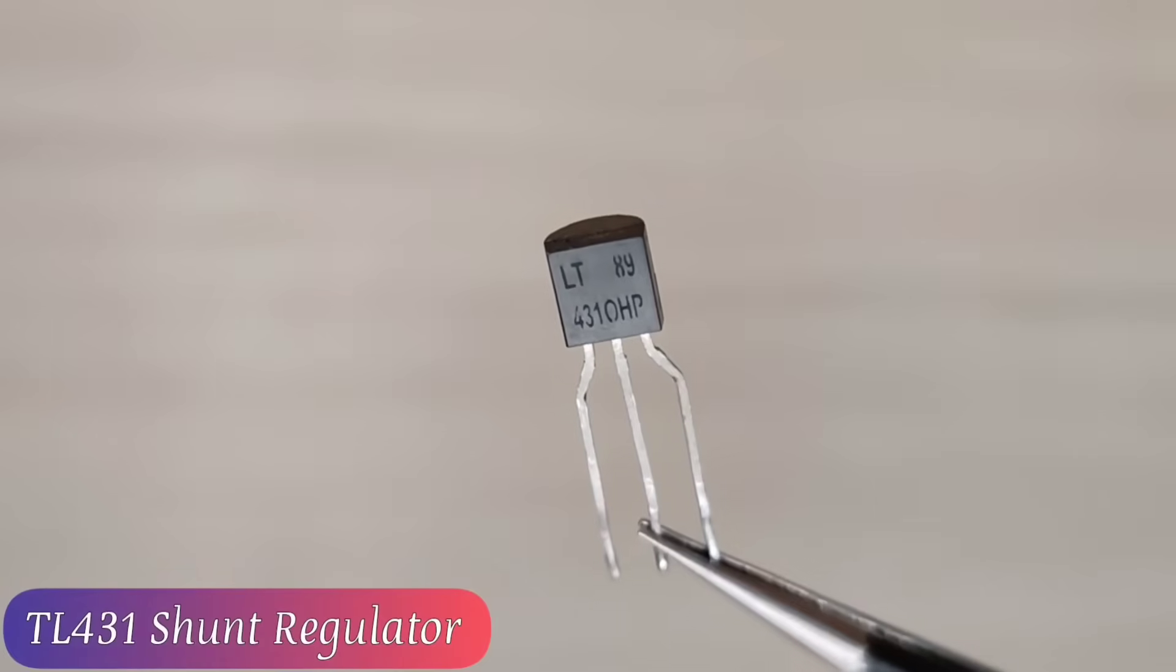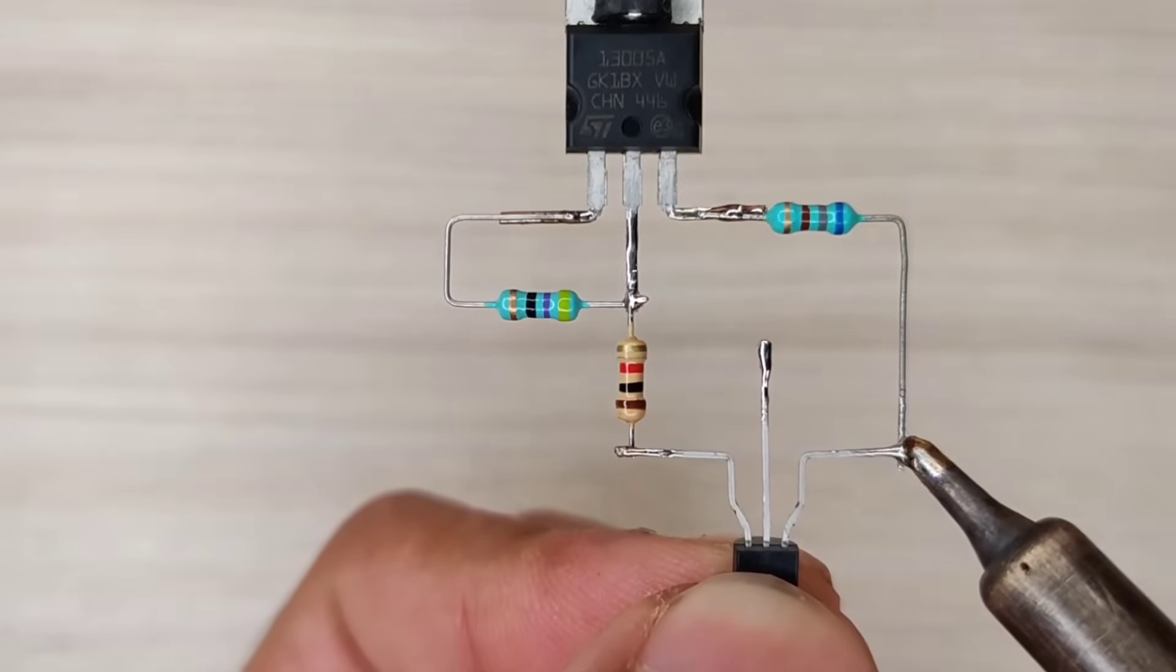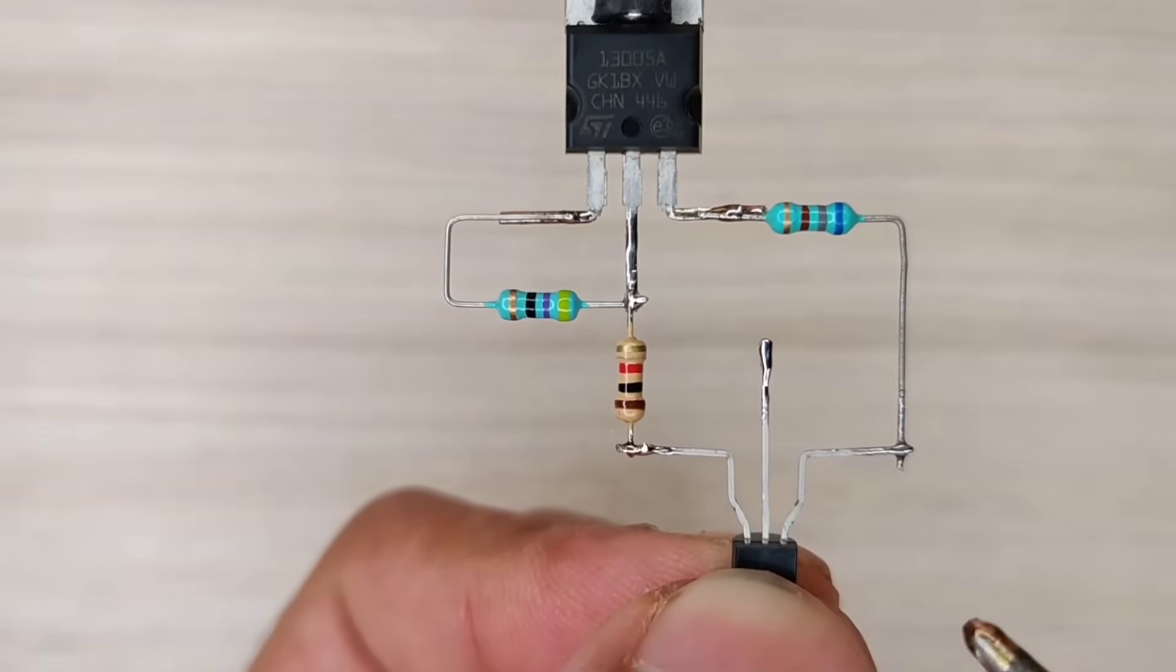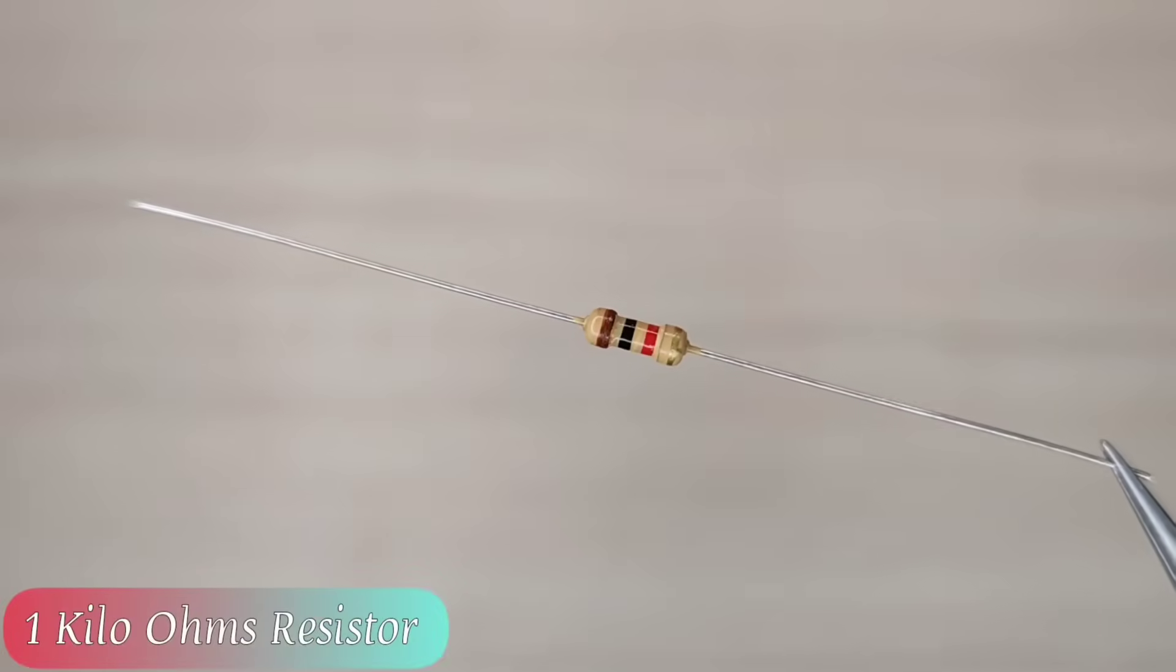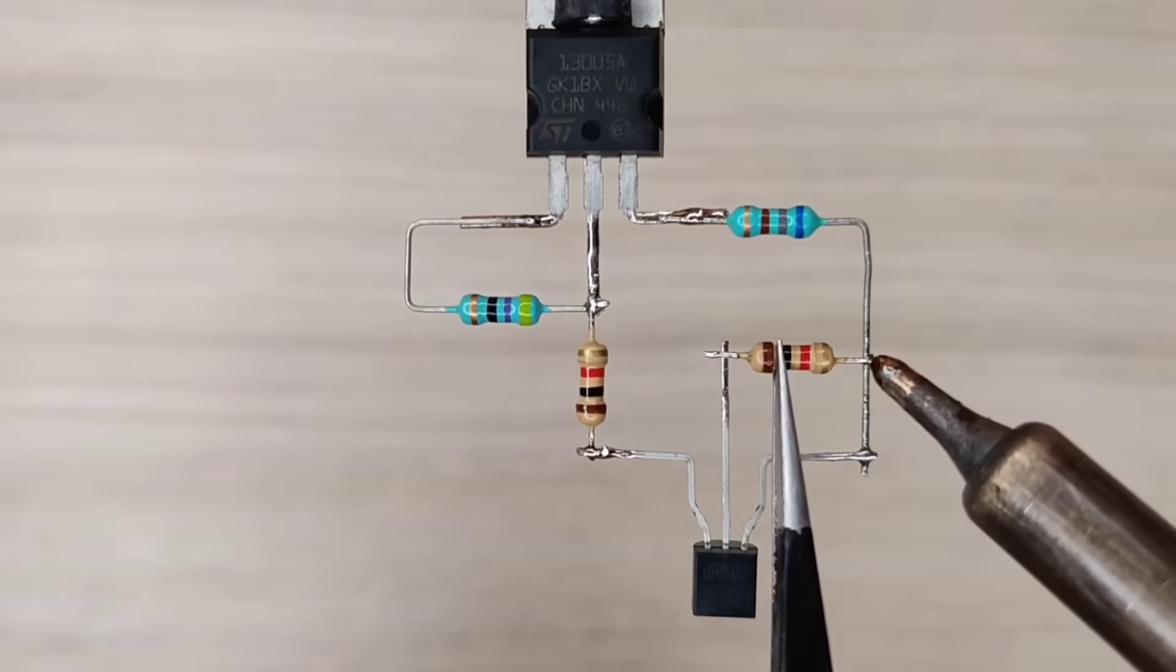Now take a TL431 shunt regulator, and solder between these two resistors. Take another 1 kilo ohms resistor and solder between its pin 1 and 2.